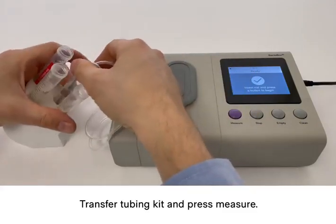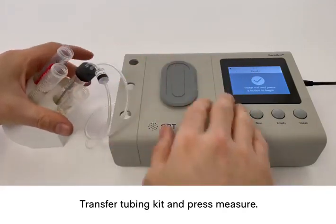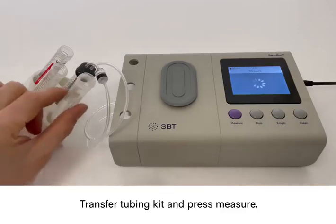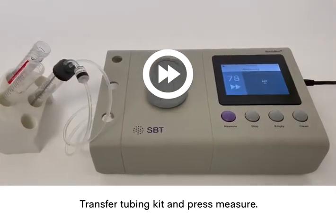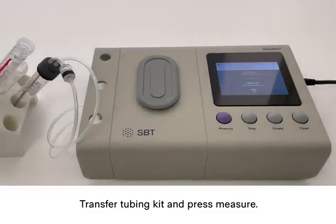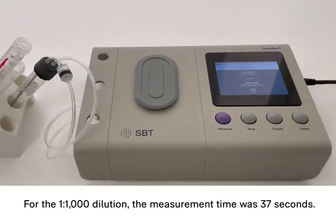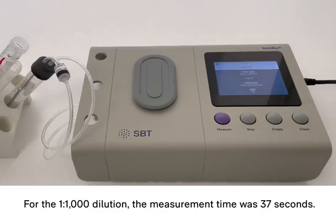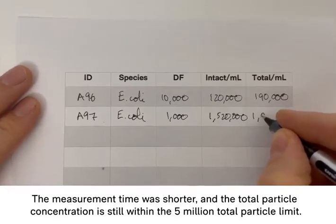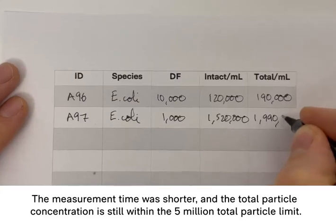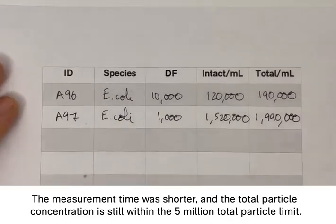We're not doing a clean in between because the carryover is negligible when moving to a higher concentration of bacteria. So simply transfer the tubing kit and press measure. For the 1 to 1,000 dilution, the measurement time was 37 seconds. This measurement took much shorter time and the total particle concentration is still within the 5 million total particle limit.